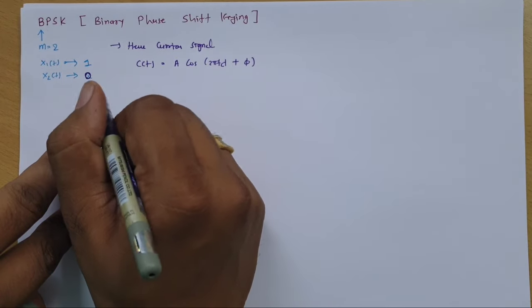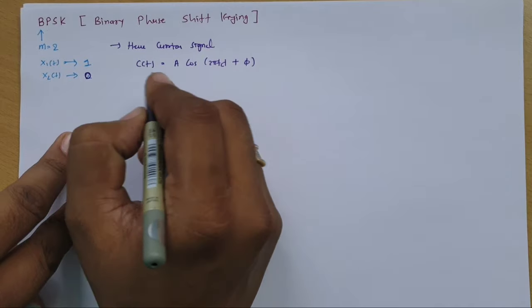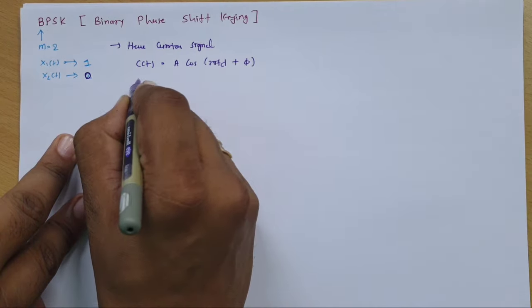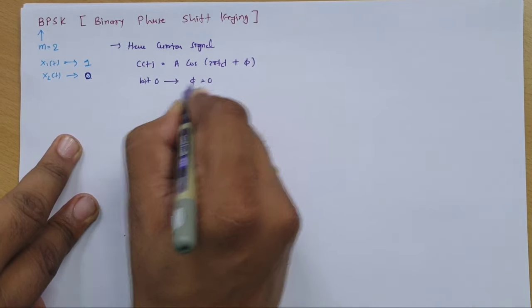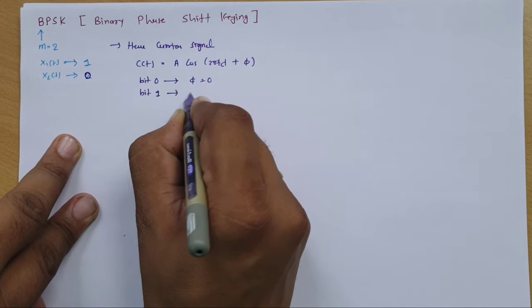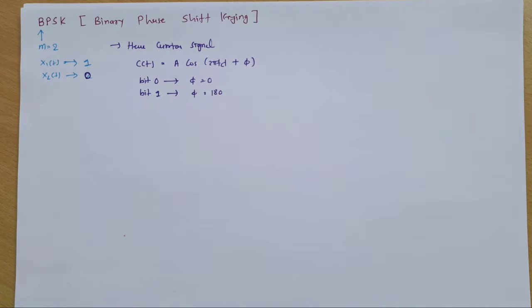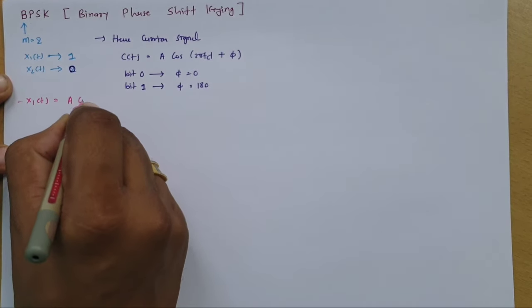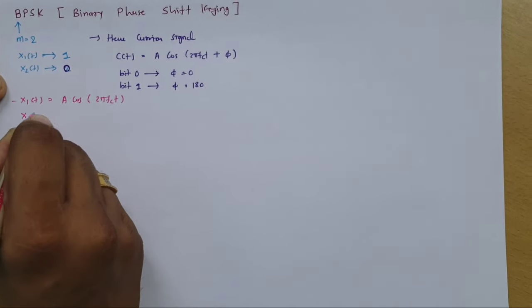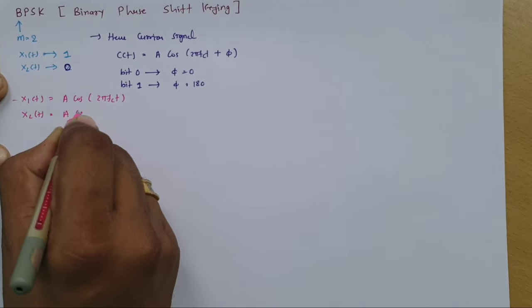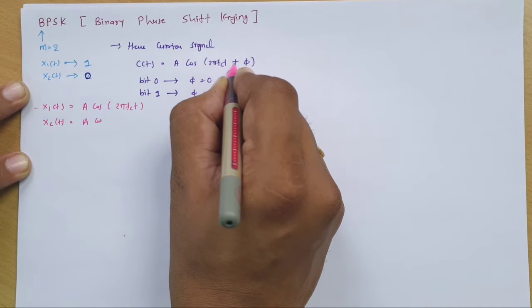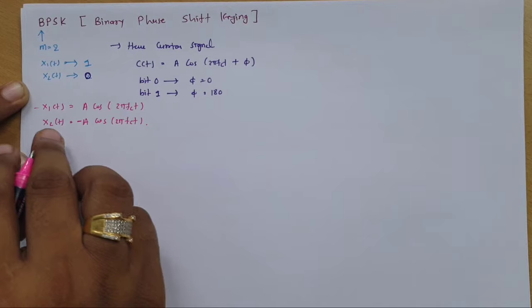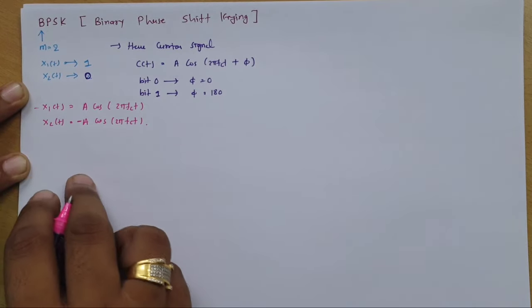If I provide 0° phase with bit 1 and 180° phase with bit 0, then x1(t) and x2(t) will share the same frequency but different phase: bit 0 has φ = 0° and bit 1 has φ = 180°. Placing these values, x1(t) = A·cos(2π·fc·t), and x2(t) = A·cos(2π·fc·t + 180°), which simplifies to x2(t) = −A·cos(2π·fc·t). That is how bit 0 and bit 1 get represented in terms of symbols.